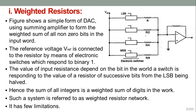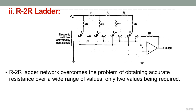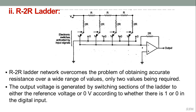The limitations of the weighted resistor network are that accurate resistors must be used for each bit, it is difficult to obtain the required wide range of resistance values, and it is limited to four-bit conversion. The R-2R ladder network is more commonly used and overcomes the problem of obtaining accurate resistance over a wide range, requiring only two values of resistance. The output voltage is generated by switching sections of the ladder to either the reference voltage or zero volts according to whether there is a one or zero in the digital input, and can be further amplified.